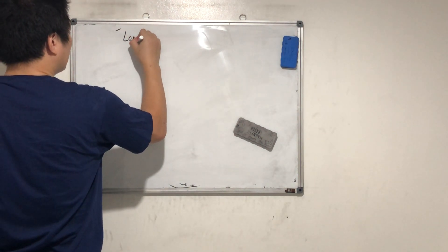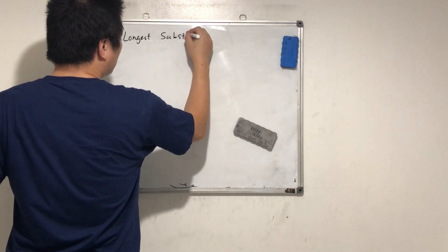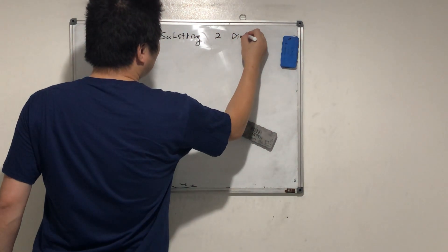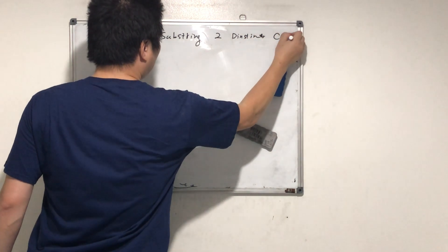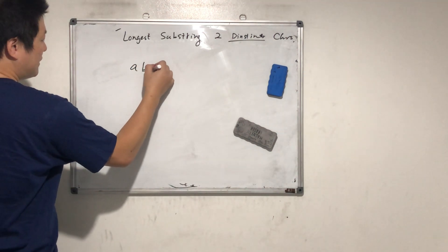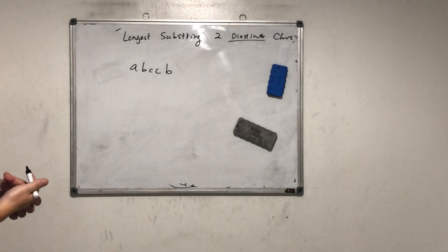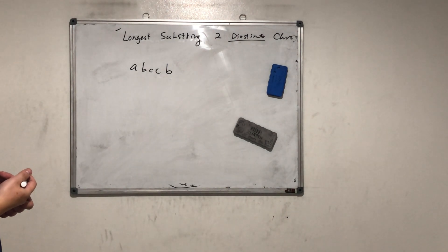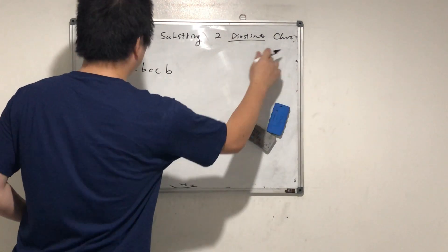Longest substring with two distinct characters. What's distinct? A, B, C — that doesn't exist anymore. Distinct means unique. Unique characters.